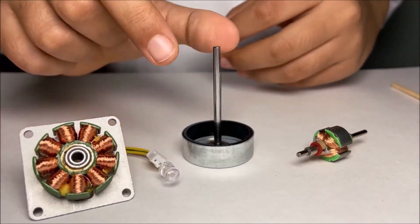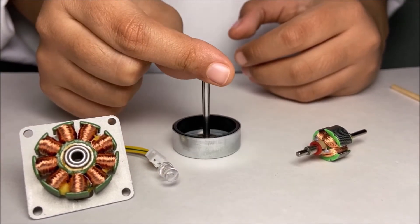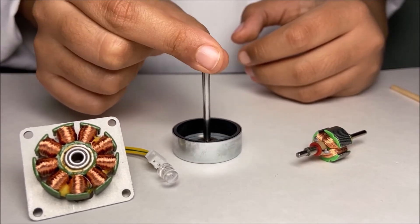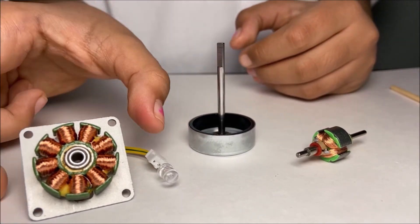It also depends on how fast I spin the magnet. If I spin it fast, there's lots of current. When I spin it slow, there's only a little bit of current.